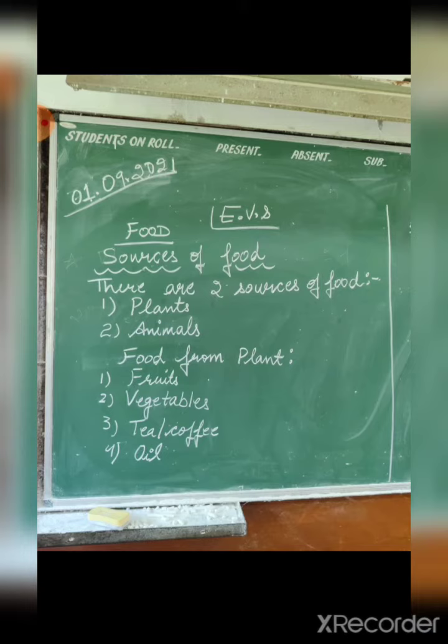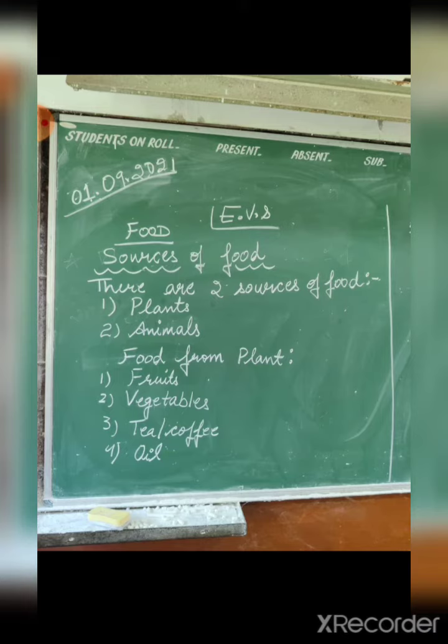Which food is made from plants? Like fruits, vegetables, tea, coffee, oil. Fruits and vegetables we have discussed in detail. Tea and coffee you know. Now, oil — there are many oils that we get from plants: coconut oil, mustard oil, olive oil, sunflower oil, soybean oil. All these oils we extract from plants.